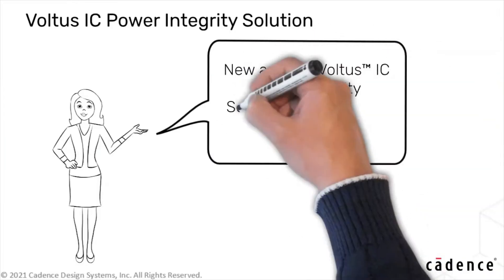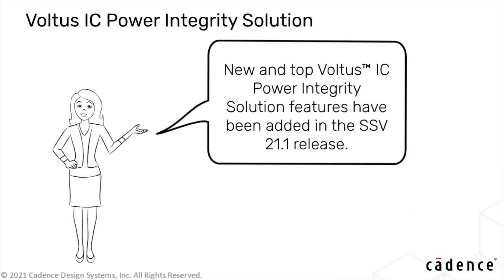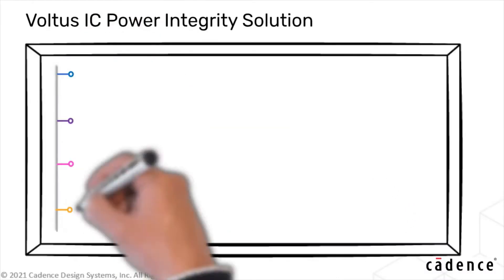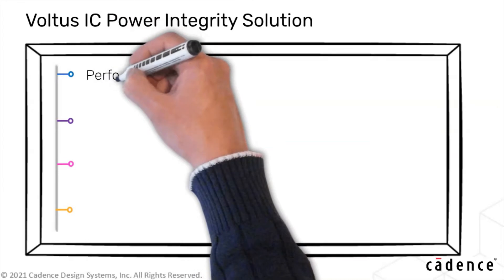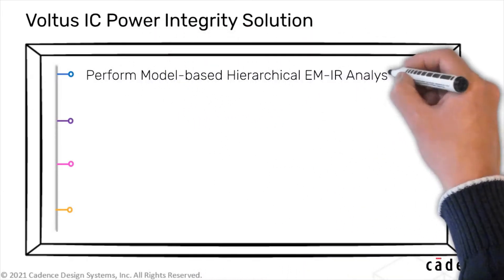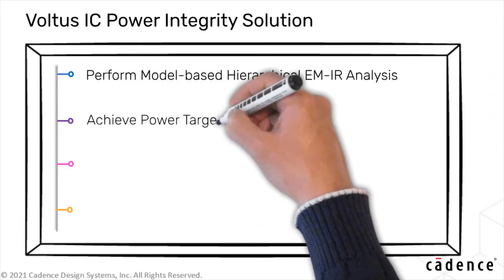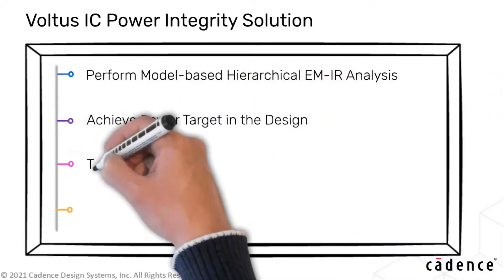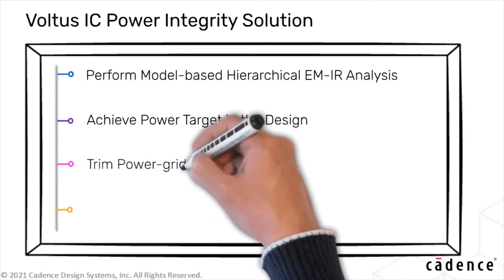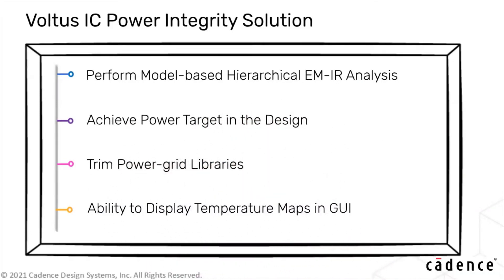In this video, we will talk about the top Volta's features introduced in the Silicon Sign-Off and Verification 21.1 release. First, we will explore our model-based hierarchical EMIR solution for large designs. Then, we will take a look at a new flow to define and achieve power targets. Next, we look at a new command to trim power grid libraries, and we'll wrap up with an exciting update about Volta's GUI.